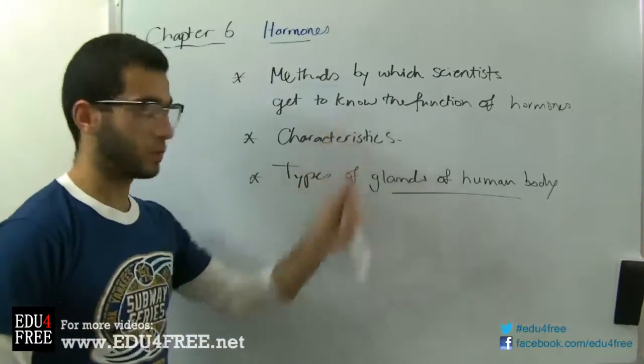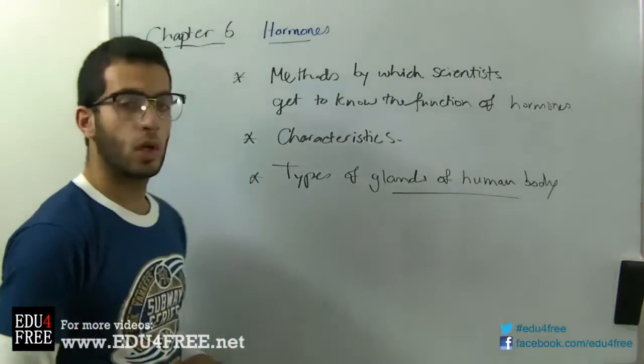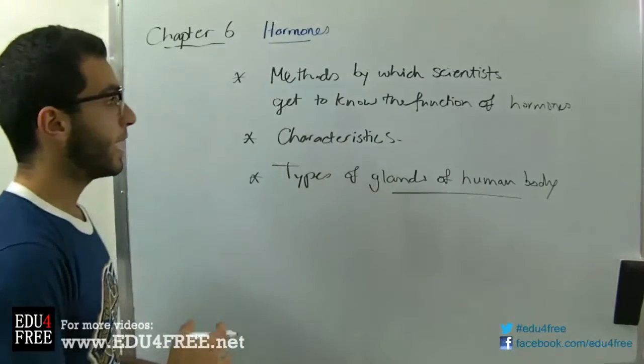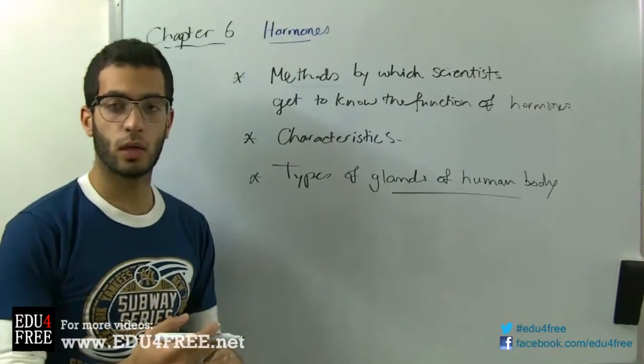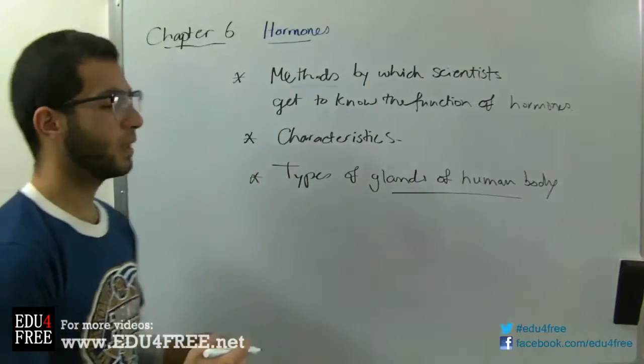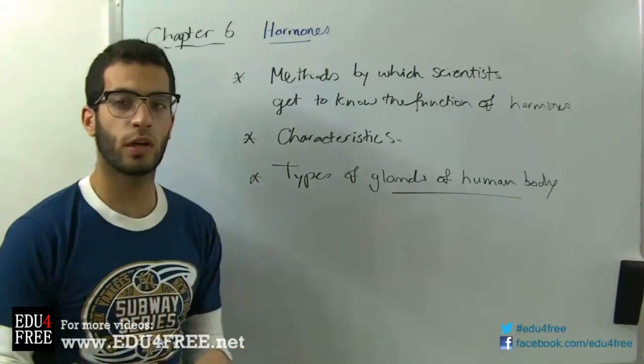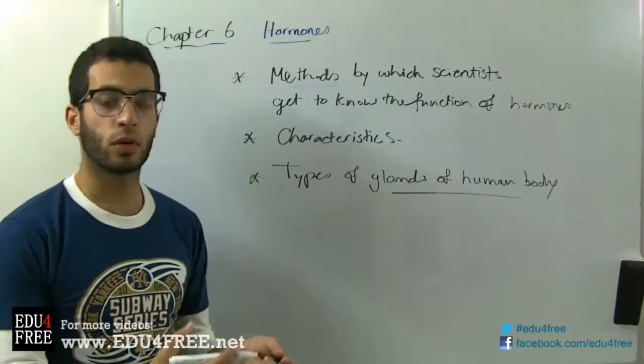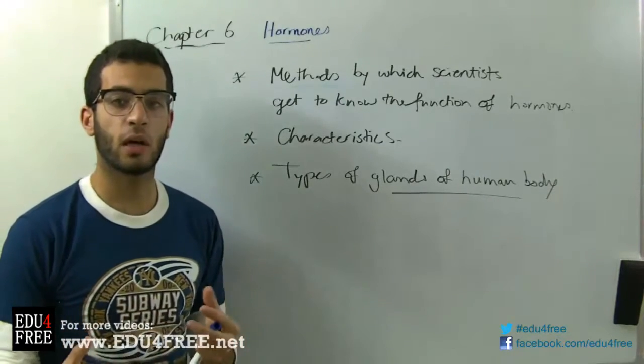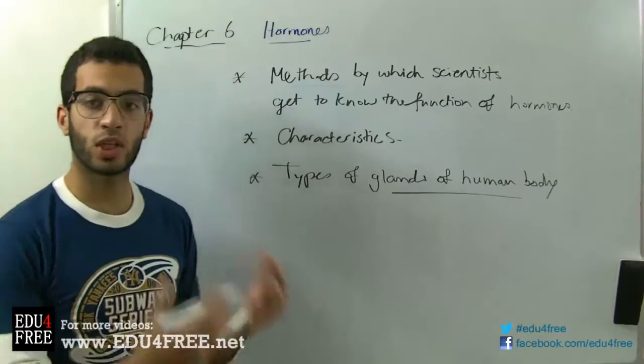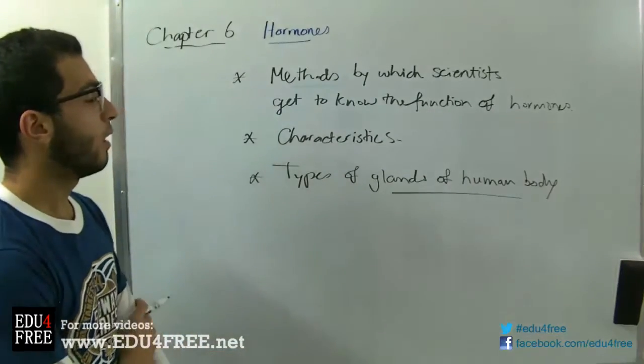So first of all, the methods by which scientists get to know the function of hormones. There are two methods. They actually removed the endocrine glands that they want to inspect so that they can see what change will occur in the function of the organ or the growth rate of the organ. Will it increase, decrease, the organ will malfunction or change its function.